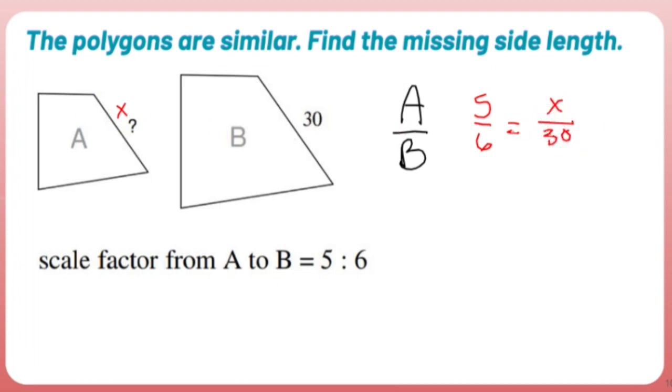Now when you have a proportion, you do crisscross applesauce, which means you multiply diagonal numbers. Doesn't matter which one you start with. 6 times X is 6X. Then you drop down the equal sign and multiply the other diagonals. 5 times 30 is 150.